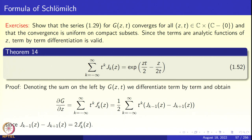We come to Theorem 14. Theorem 14 says the summation of t^K * J_K(z), K from minus infinity to infinity, has a closed form expression, namely exp(z/2 * (t - 1/t)). That is display 1.52. Denoting the sum by G(z,t), we can differentiate term by term — the coarse estimate tells us that differentiation is a valid operation, and the series of derivatives converges uniformly.